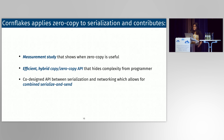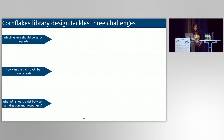Cornflakes applies zero copy to serialization and contributes: a measurement study that shows when zero copy is useful in the context of serialization; an efficient hybrid copy/zero-copy API that hides the complexity of this decision from the programmer; and a co-design API between serialization and networking that allows for various performance optimizations, such as one I'll discuss today called combined serialize-and-send.